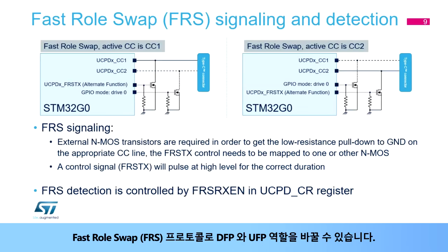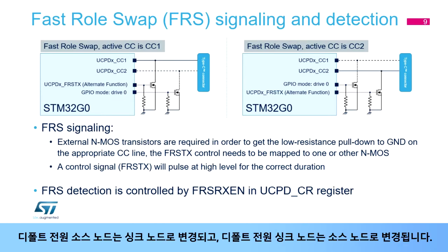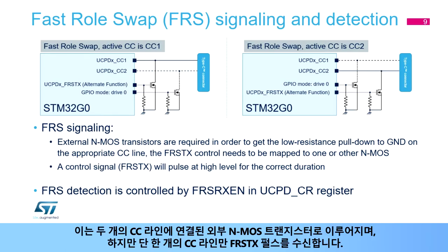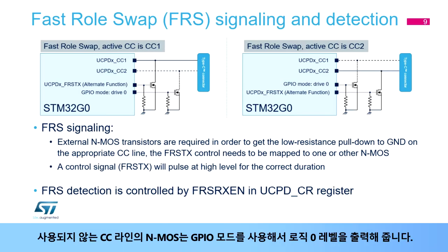The FastRollSwap protocol swaps the roles of DFP and UFP: the default power source node becomes the sink node, and the default sink node becomes the source node. To request an FRS to the source node, the sink device temporarily connects the appropriate CC line to ground. This is achieved by external NMOS transistors on both CC lines; however, only one will receive the FRSTX pulse. The NMOS on the inactive CC line should be driven with a logic zero level using GPIO mode.